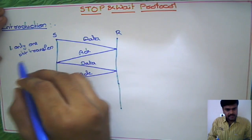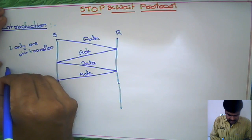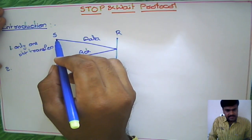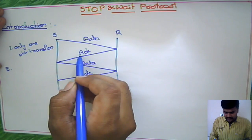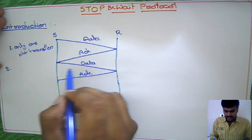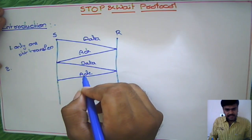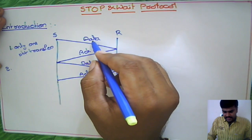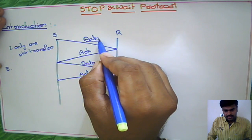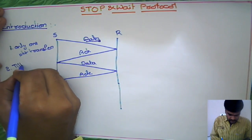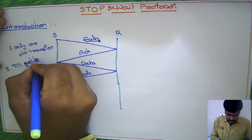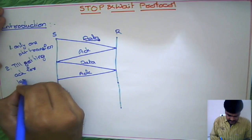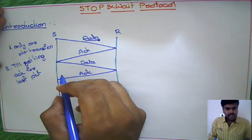The second point from the sender side: he has to send the next packet only after getting acknowledgement for the previous packet. Suppose he sent the first data packet — he has to wait for acknowledgement before sending the next one. Till he gets acknowledgement for the previous packet, he should not send the next packet.